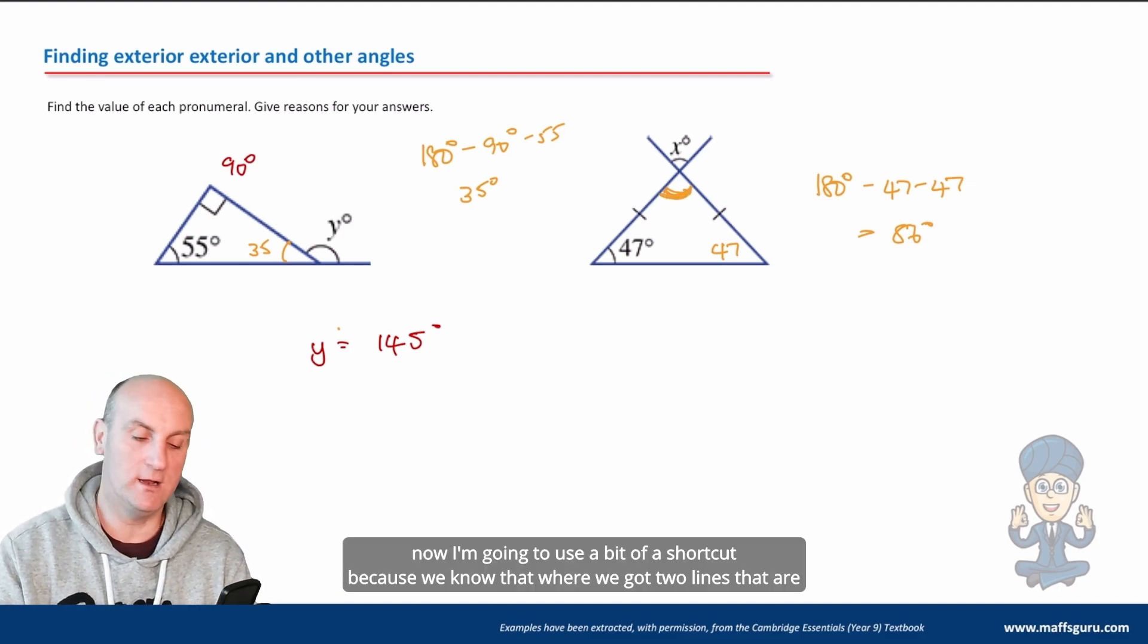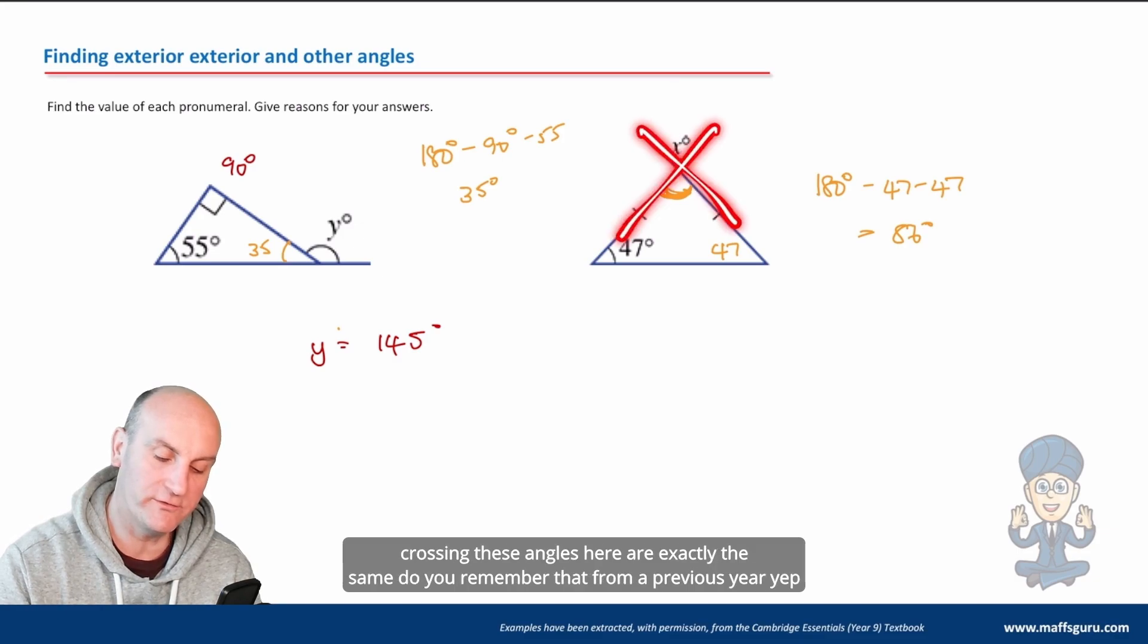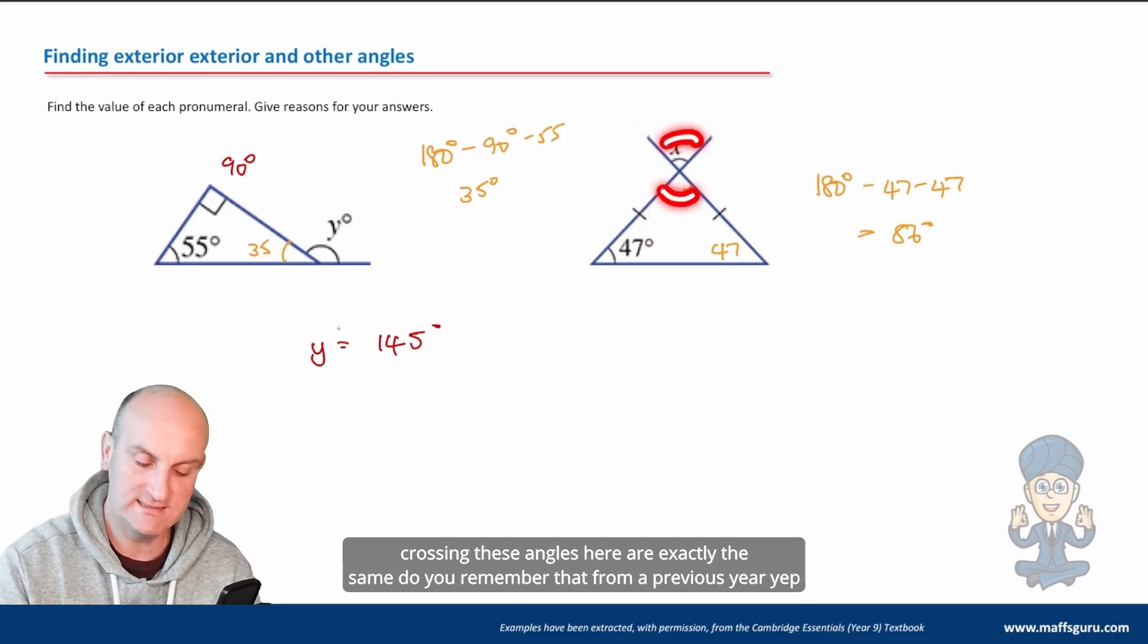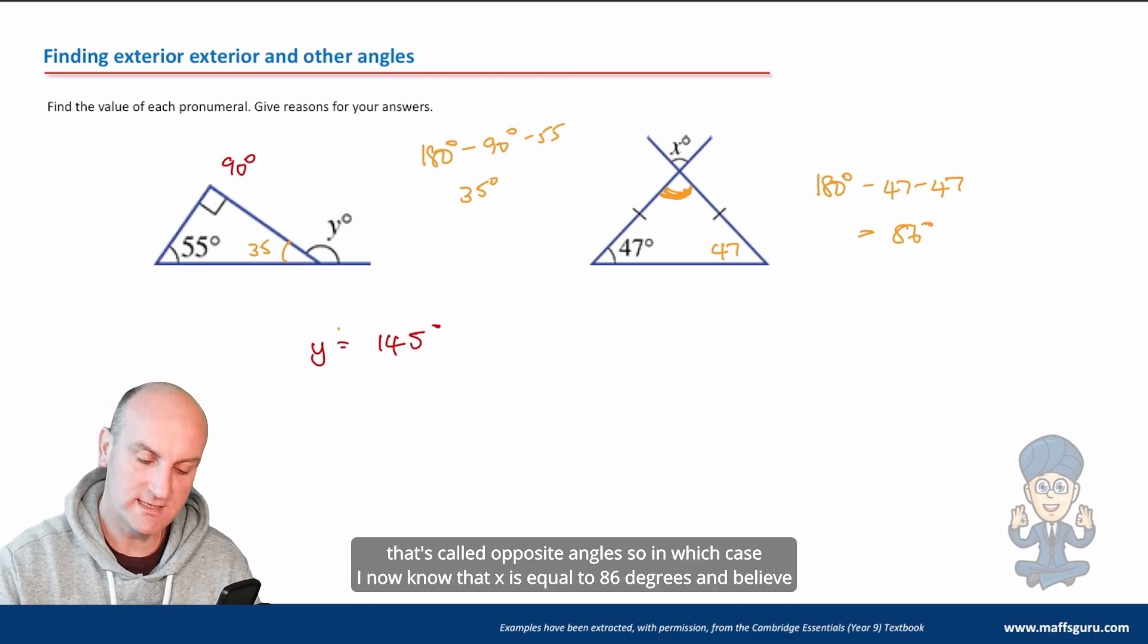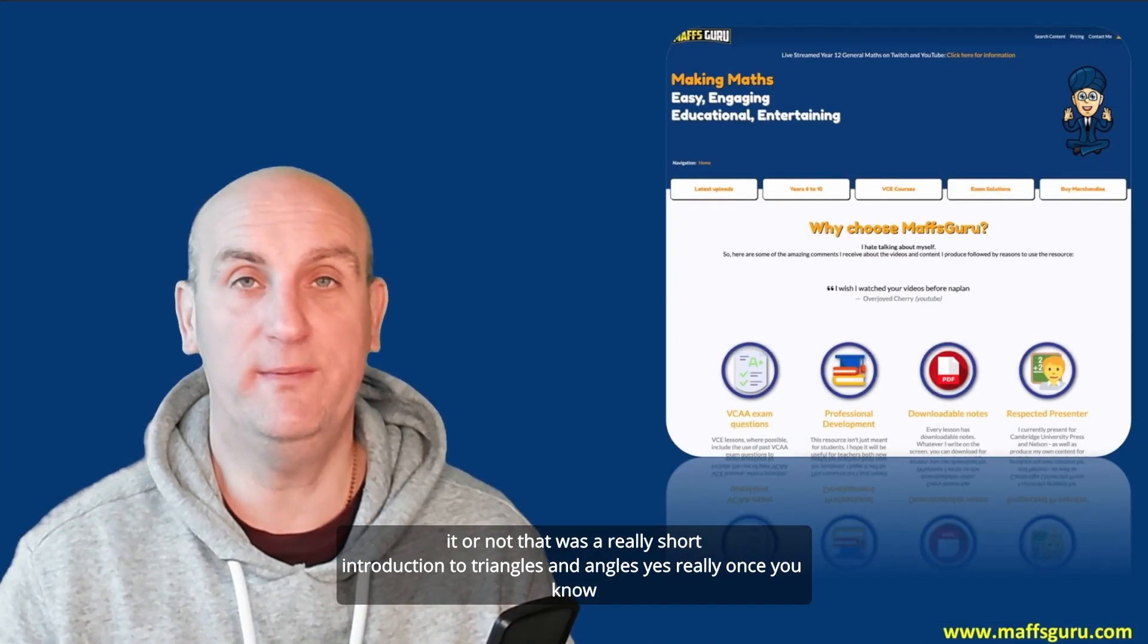I'm going to use a bit of a shortcut because we know that where we got two lines that are crossing, these angles here are exactly the same. Do you remember that from a previous year? That's called opposite angles. So in which case I now know that x is equal to 86 degrees. And believe it or not, that was a really short introduction to triangles and angles.